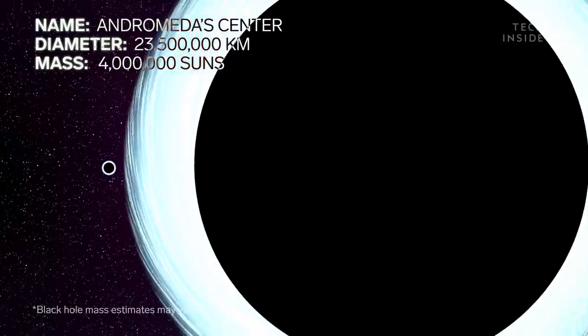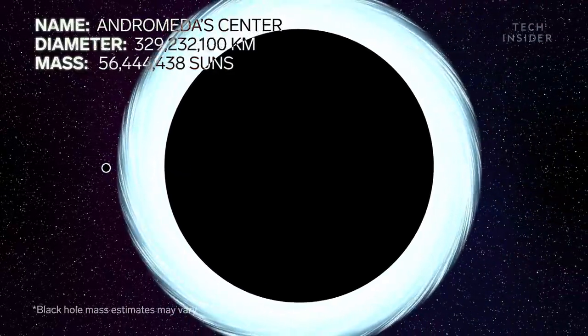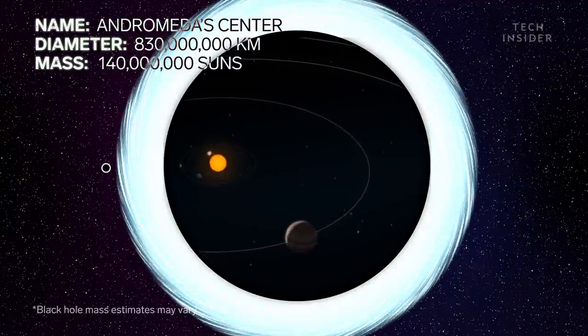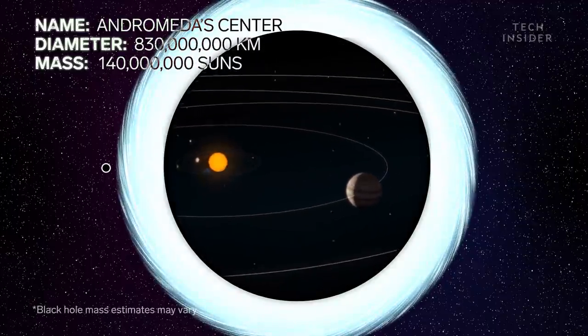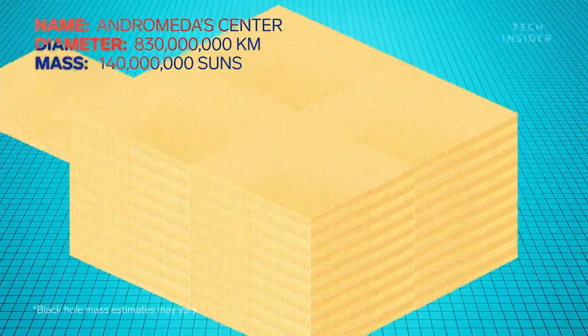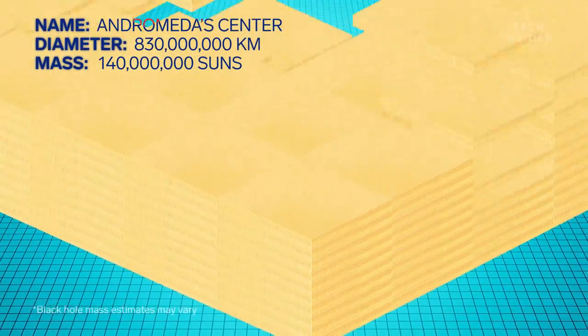Take the one at the center of our neighbor, the Andromeda galaxy, which has a diameter of 516 million miles, larger than Jupiter's orbit, and contains enough mass to equal that of 140 million suns.